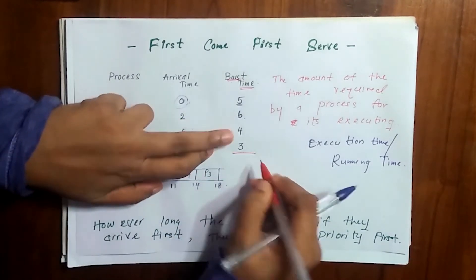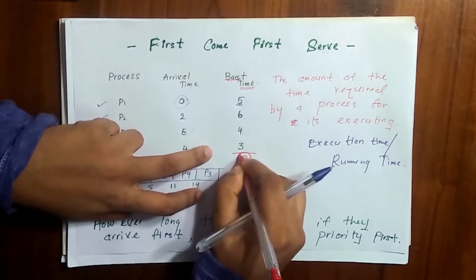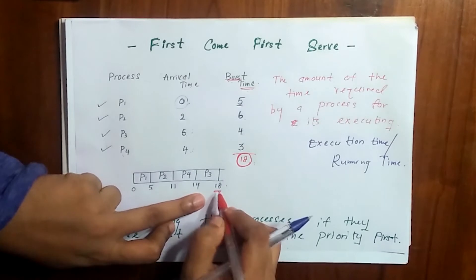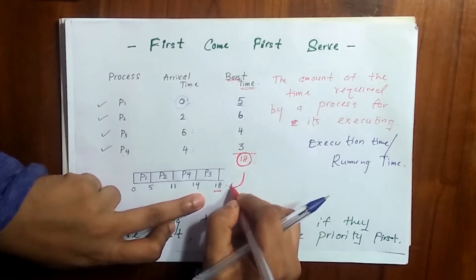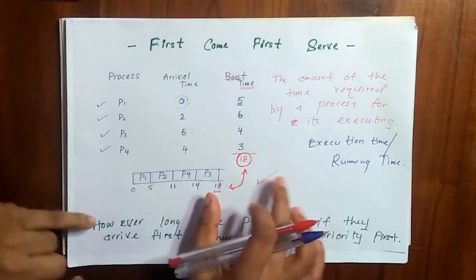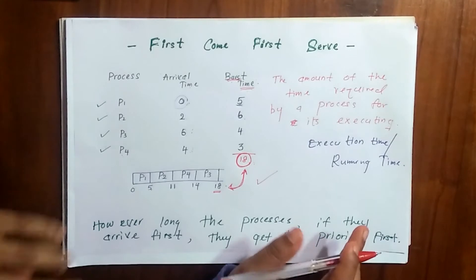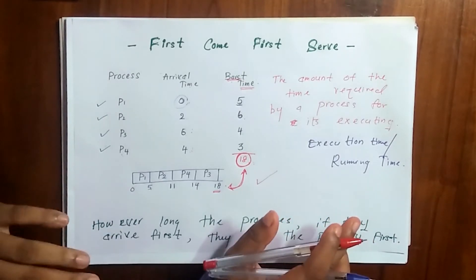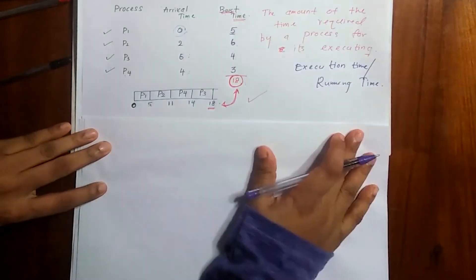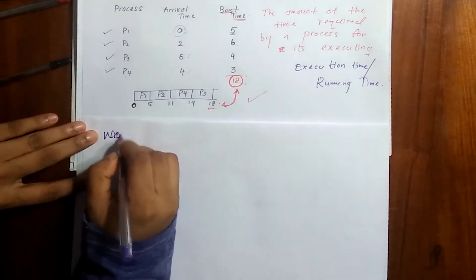The total of the burst times is 5 plus 6 plus 3 plus 4, which equals 18. And at the end of the Gantt chart the value is also 18, so these two values match, confirming the Gantt chart is correct. We are done with the first step. Now let's move to the second step: finding the waiting time.